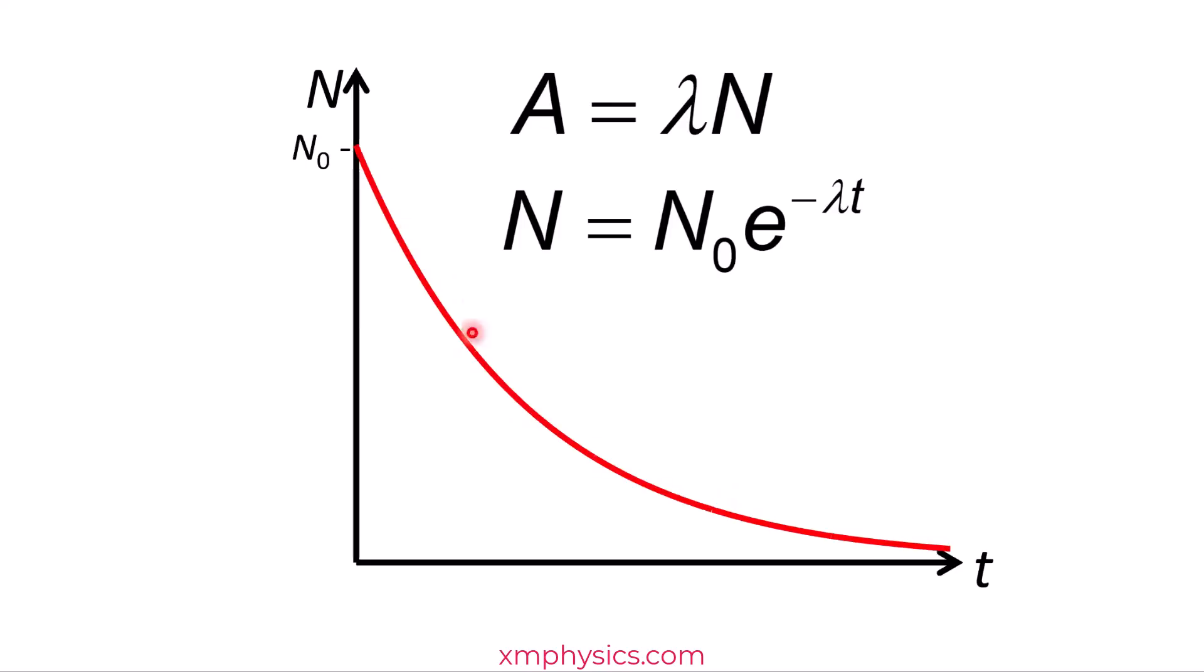So the rate of decay is determined by the decay constant. The larger the decay constant, the steeper the exponential decay will be. Which makes sense because the decay constant is kind of like the probability of decay per unit time. It kind of represents the fraction of the population that will decay per unit time. So the larger the decay constant, the faster the population will decay.